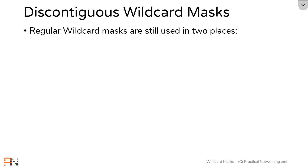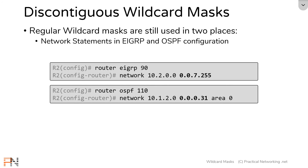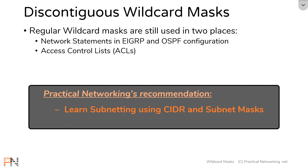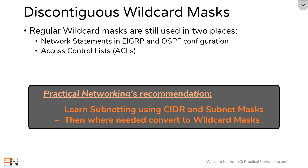So while the functionality is cool in theory, discontiguous wildcard masks are very rarely used. Regular wildcard masks, however, are still used in two key places: the first is in network statements on Cisco routers when configuring EIGRP or OSPF, and the second is in access control lists on Cisco routers. My recommendation is to become intimately familiar with subnetting using CIDR and regular subnet masks, which are used across the entire network engineering industry. In the few places you still need to use wildcard masks, simply use the subnet mask to wildcard mask conversion trick shown in the prior video.